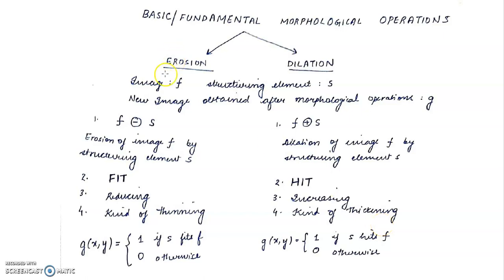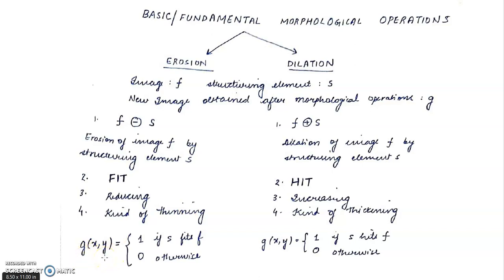We represent erosion as f ⊖ s, read as 'erosion of image f by structuring element s.' Similarly, dilation is represented as f ⊕ s, read as 'dilation of image f by structuring element s.' Mathematically, for the processed image g(x, y): it is 1 if s fits f, 0 otherwise for erosion; and 1 if s hits f, 0 otherwise for dilation.